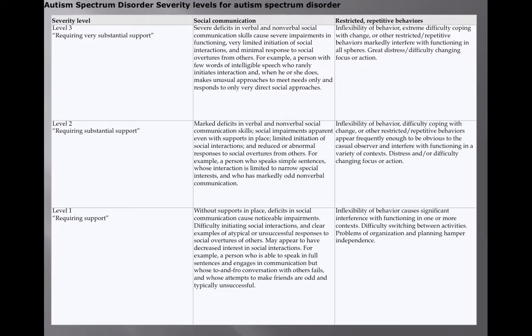This is a copy straight from the DSM-5 showing the severity levels — level 1 being the lowest amount of support needed and level 3 being the highest amount of support needed — for both the social communication domain and the restrictive repetitive behavior domain. For more information on that, you can always look at the DSM-5.